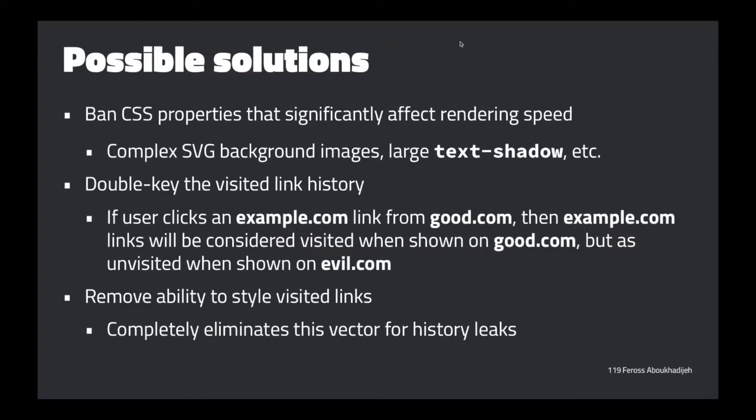This is inherently a really hard problem to solve — these kinds of leaks exist. One possible fix: ban CSS properties that affect rendering speed like text-shadow even on unvisited links. Another idea is 'double-keying' the visited link history — drawing a link as visited or unvisited based on which site you visited it from. If you went to good.com and clicked a link to example.com, example.com shows as visited on good.com — but later on evil.com, it shows as unvisited.